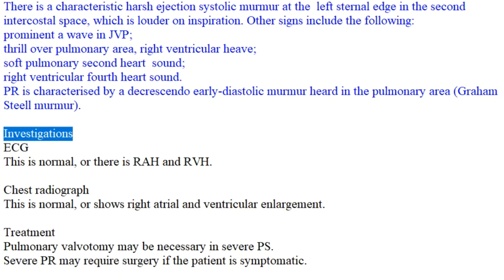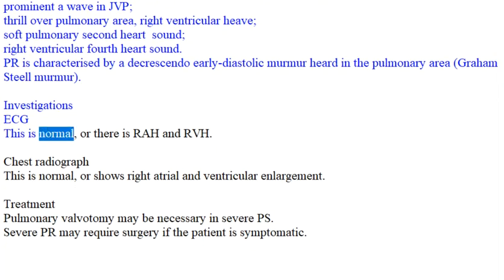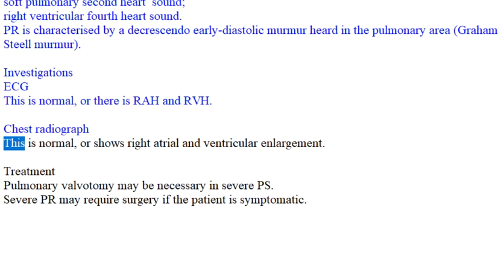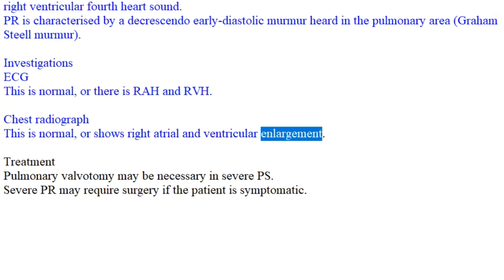Investigations: ECG — this is normal or shows right ventricular hypertrophy (RVH). Chest radiograph — this is normal or shows right atrial and ventricular enlargement.